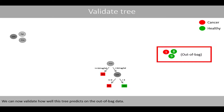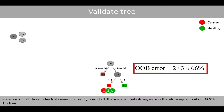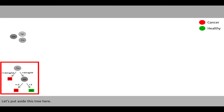We can now validate how well this tree predicts on out-of-bag data. Person number 1 was correctly predicted to have prostate cancer, whereas person number 8 and 9 were incorrectly predicted by the tree to have prostate cancer. Since two out of three individuals were incorrectly predicted, the out-of-bag error is therefore equal to about 66% for this tree.